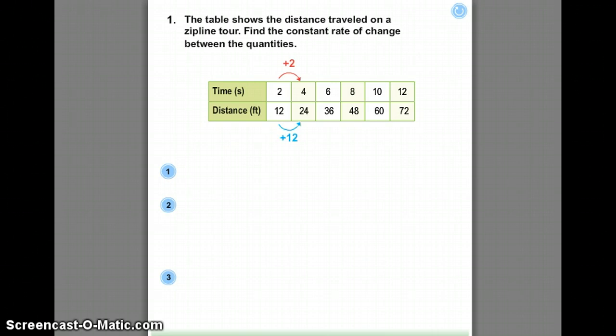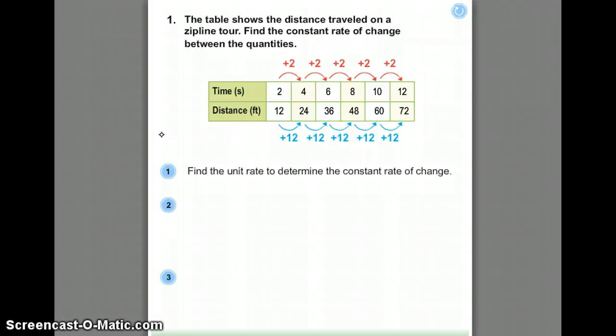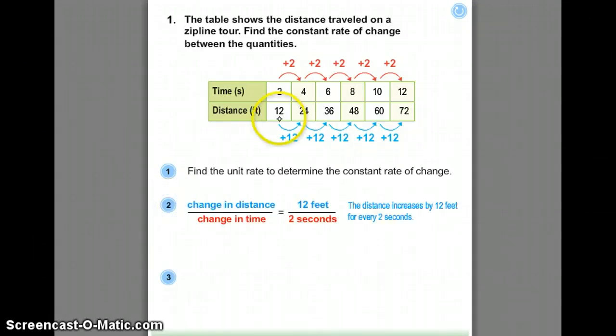Let's look at finding a rate of change. This table shows the distance that is traveled on a zipline tour. So we want to find the constant rate of change between the quantities. The first thing I need to do is find the unit rate to determine the constant rate of change, or what is the change in y over the change in x, the rise over the run. The change in the distance, because distance is my y value. Time is independent, so it's going to be my x value.